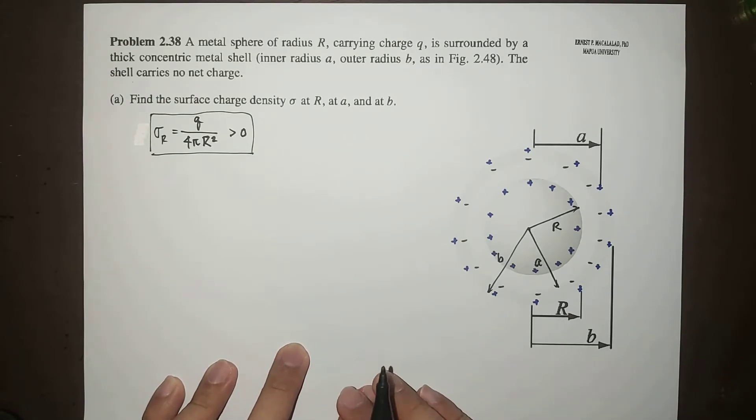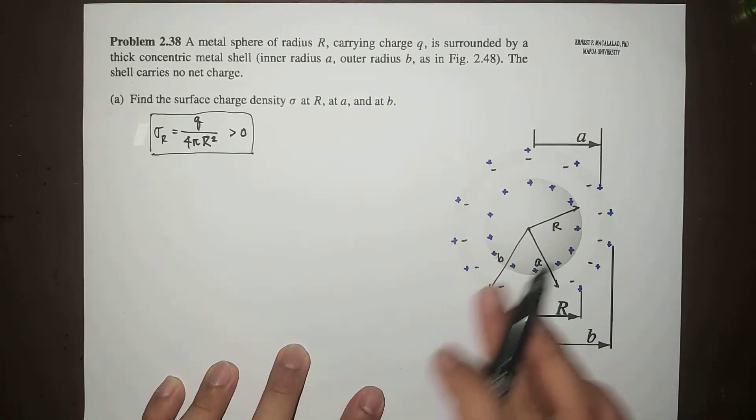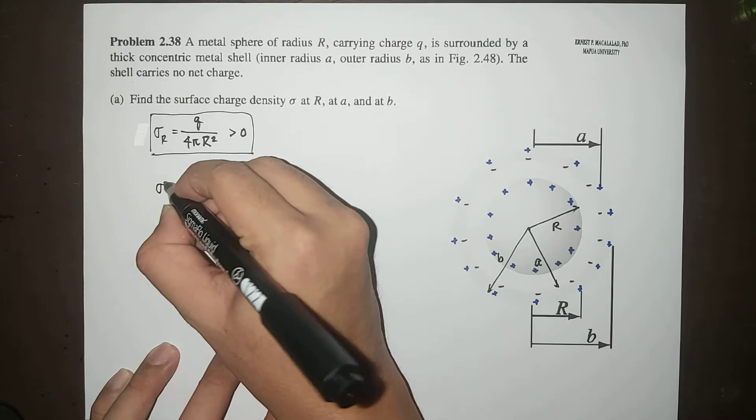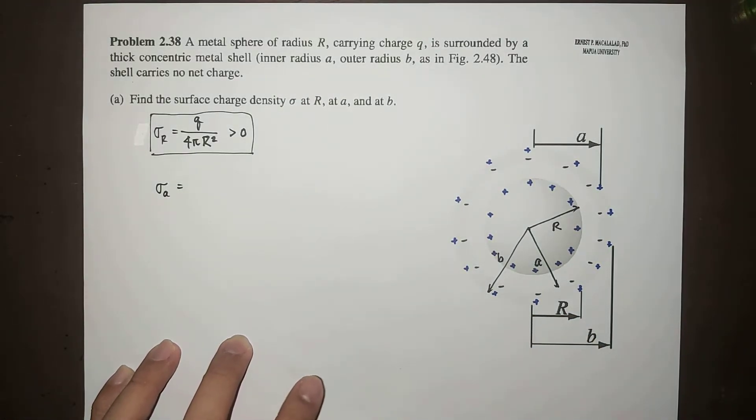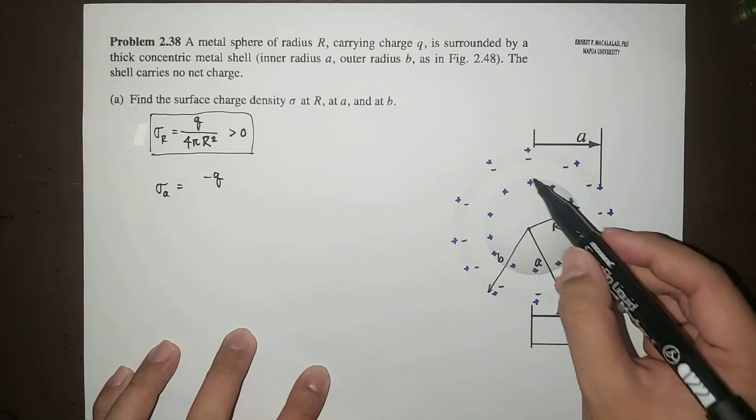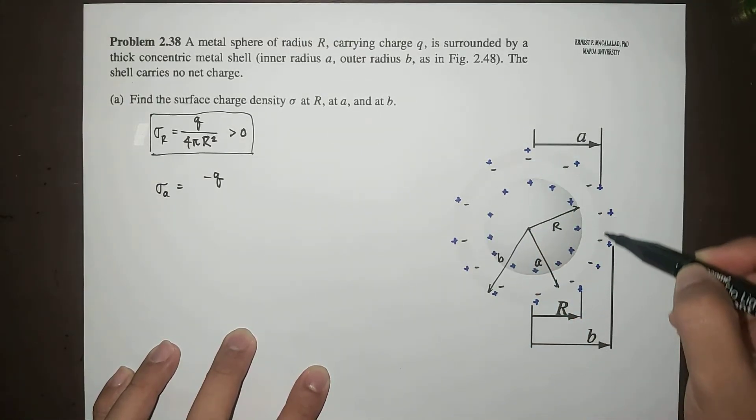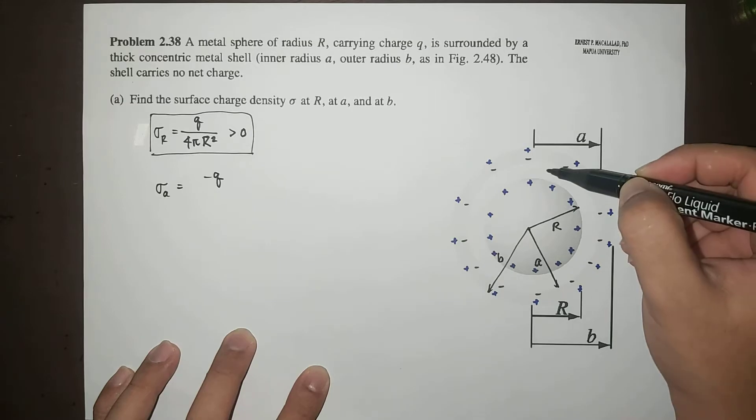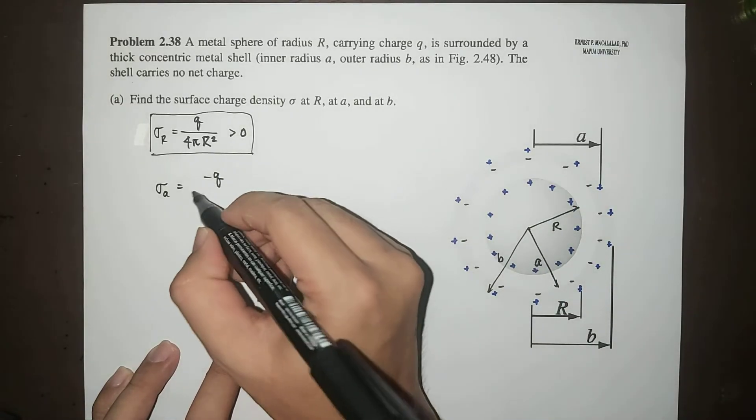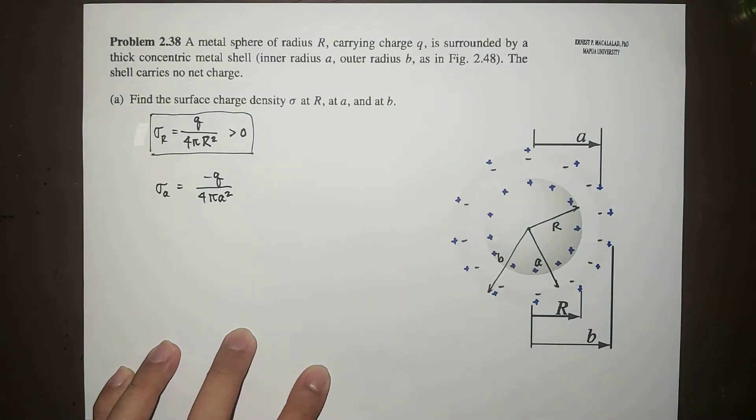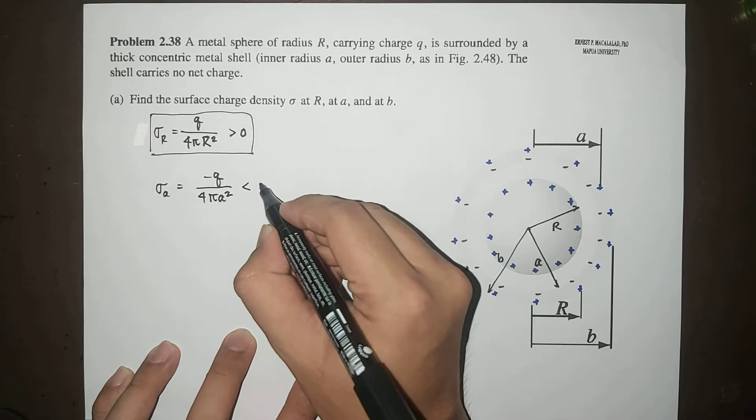As I mentioned, this causes an accumulation of negative charges on the inner radius of the shell. Thus, the surface charge density sigma at A will be equal to negative Q. Because this charge is induced by these charges, the amount of these charges will equal the amount of those charges but opposite in sign. So this equals negative Q over 4πA², and this is less than zero.